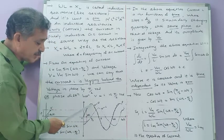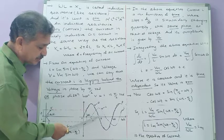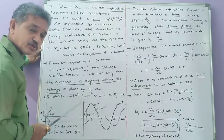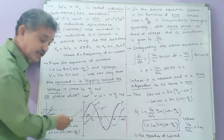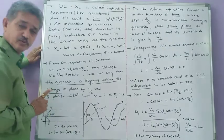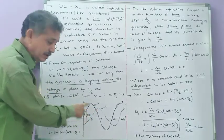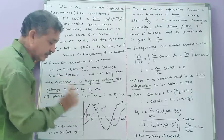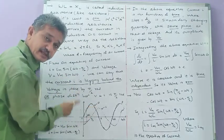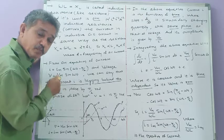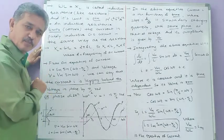When the voltage is maximum, current is 0; when current is maximum, voltage is 0. The current reaches its maximum value later than the voltage by one-fourth of the time period. This confirms that the current lags behind the voltage by π/2 radians in phase.